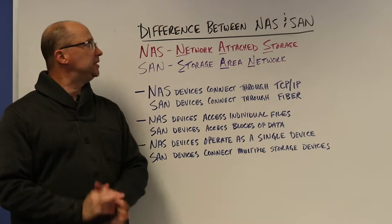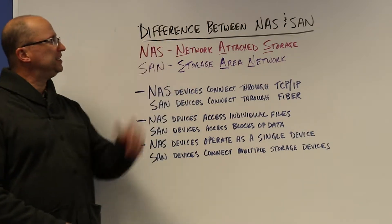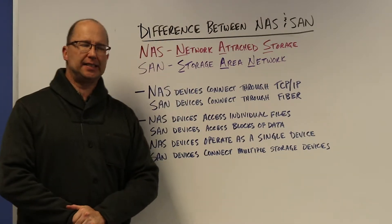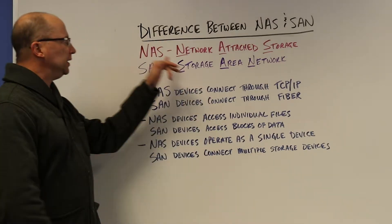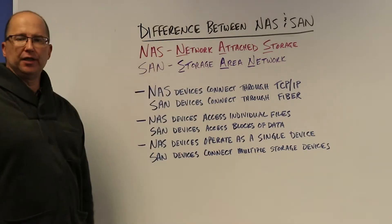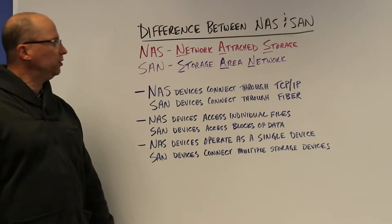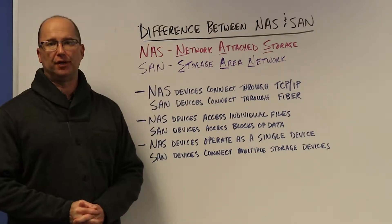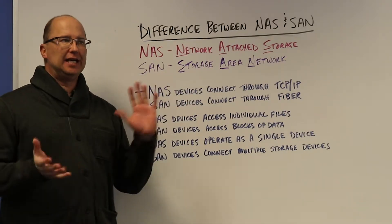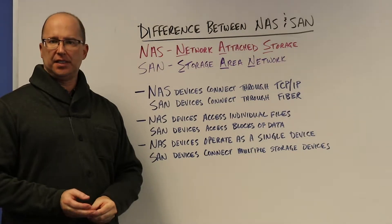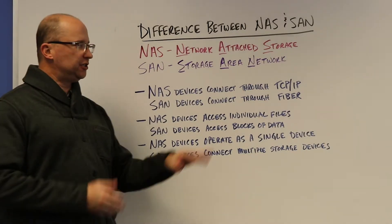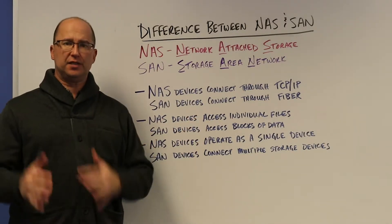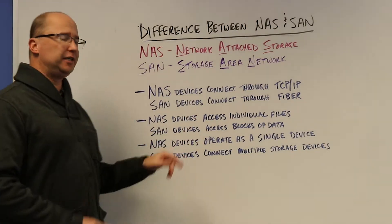Hey, this is Bruce from Gilware. Today we're talking about the difference between a NAS and a SAN. NAS is Network Attached Storage, and then we've got a SAN, Storage Area Network. There are really kind of three differences that stand out. This is just a brief overview — please read the article, it gets a little more in-depth on each of these.